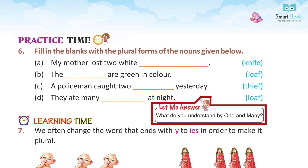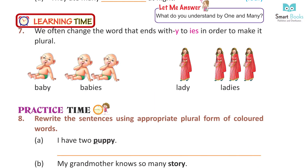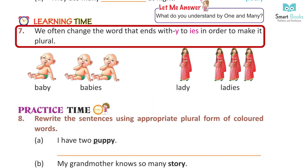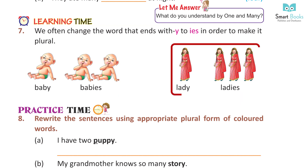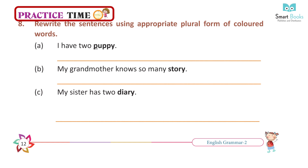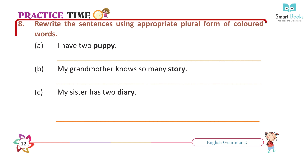Let me answer: What do you understand by one and many? Learning Time 7. We often change the word that ends with Y to IES in order to make it plural. Baby — babies. Lady — ladies. Practice Time 8.